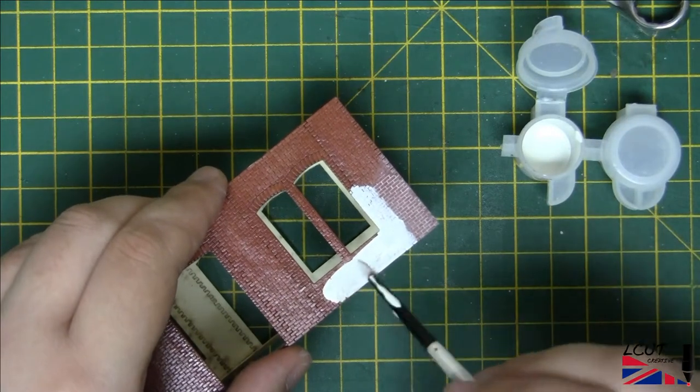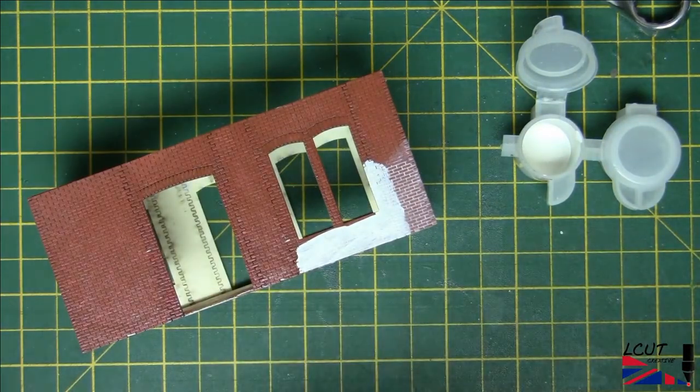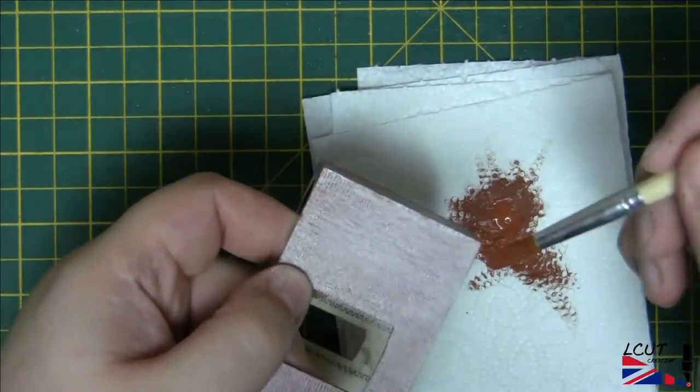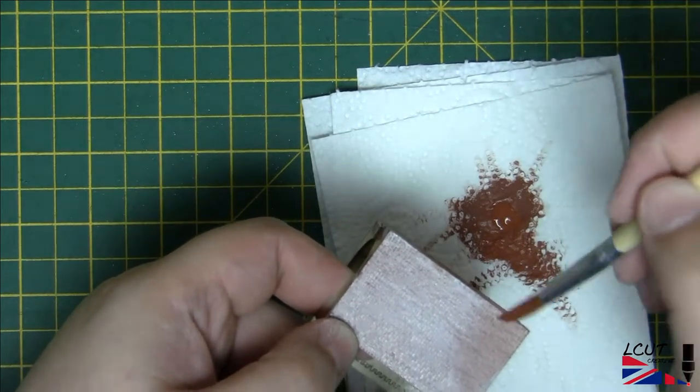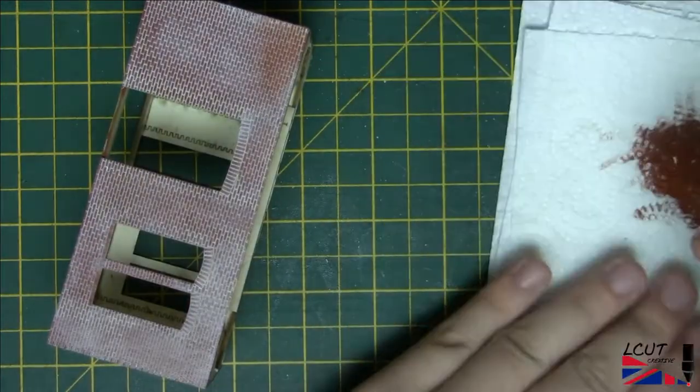It is also possible to work with a thinner wash and let it flow into the mortar lines by dabbing the brush and letting it flow off. Any excess can be later removed with a little bit of thinner on a cotton bud. The model can be further enhanced by drybrushing the brickwork with various colors to give variety and to correct the brick color if necessary.